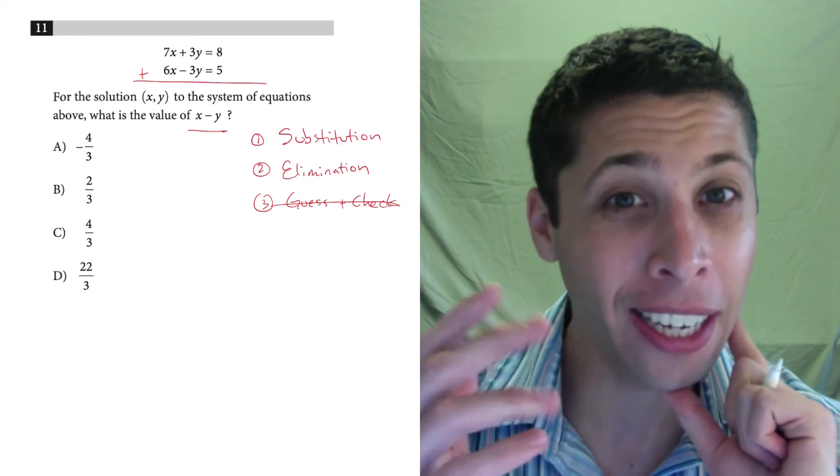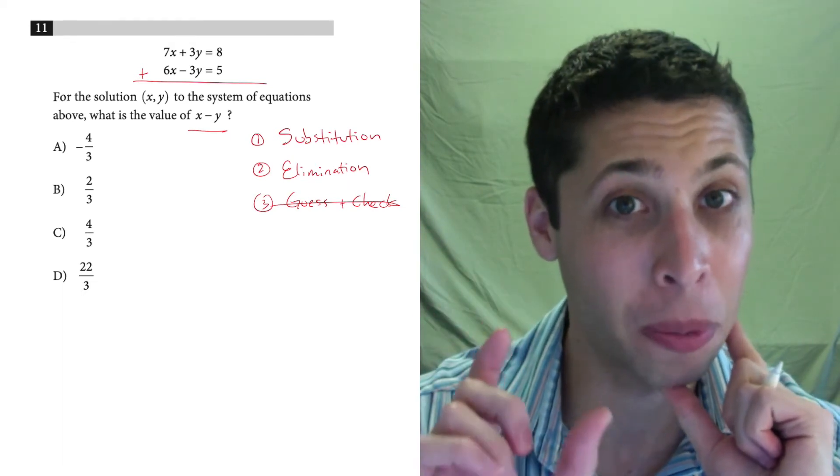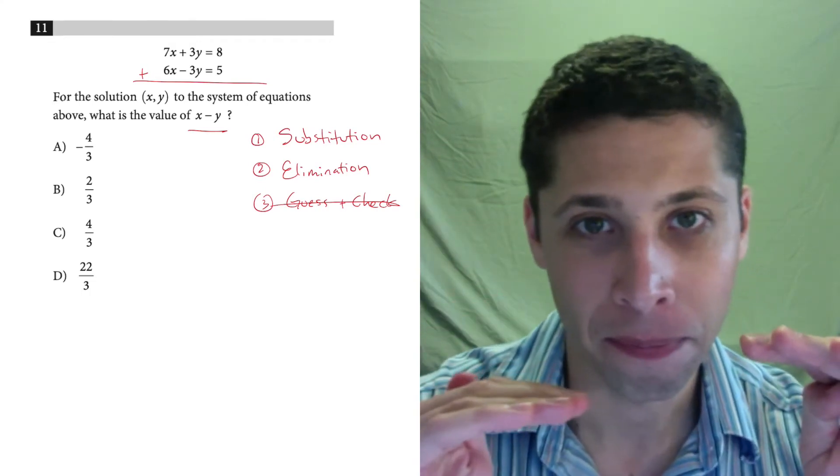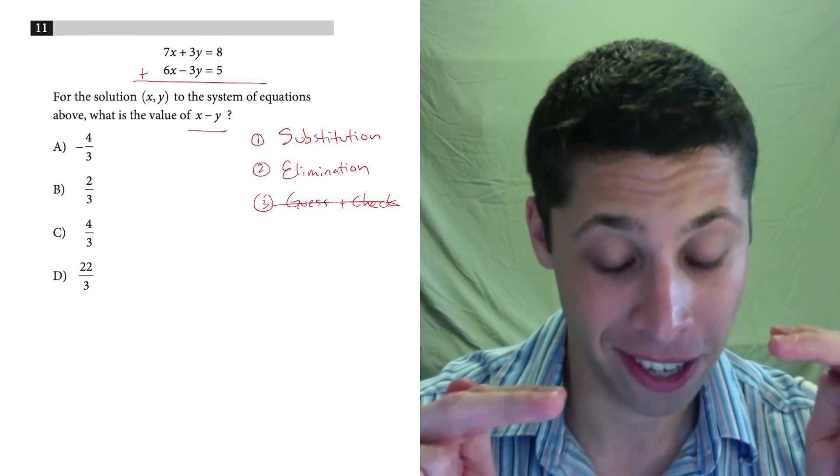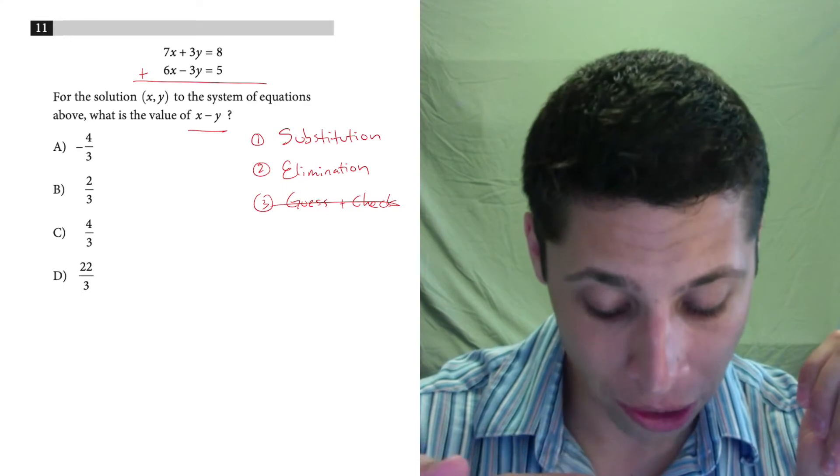And so we're kind of doing the same thing we do with substitution, getting rid of one of the variables. But in order to do it, we need them to cancel out when we add. In this case, it's basically set up for us to eliminate. Because if we add these two equations...